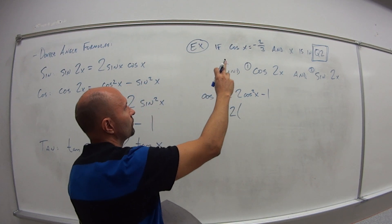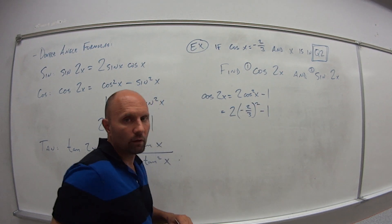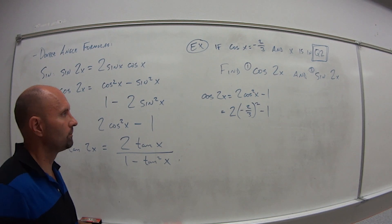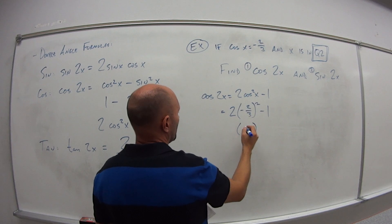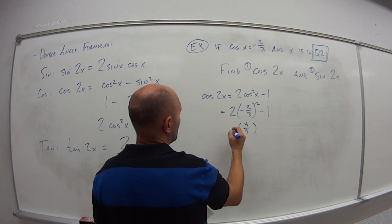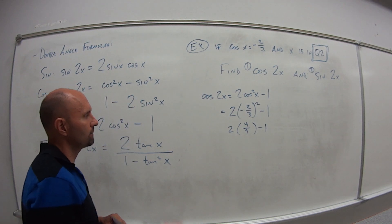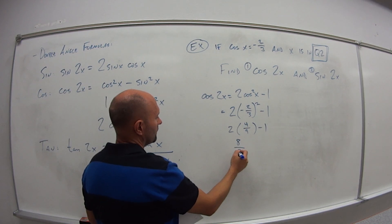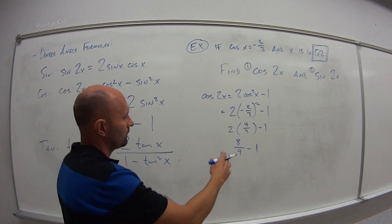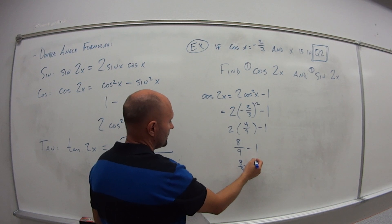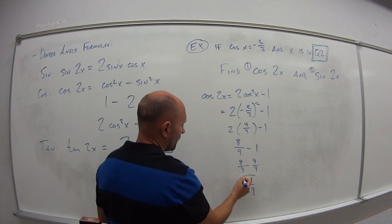So cosine of 2x is equal to 2 cosine squared x minus 1. So this is 2 times negative 2/3 squared, and then I want to subtract 1. So negative 2/3 squared is positive 4/9. Multiply this by 2, subtract 1 from the whole thing. So what do we get? We get 8/9 minus 1. So 1 is like 9/9. So we have 8/9 minus 9/9 which is equal to negative 1/9.